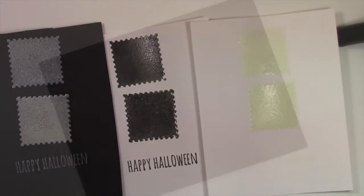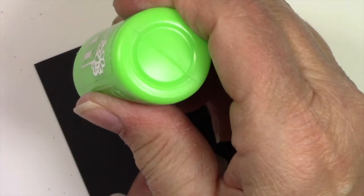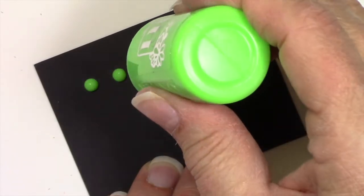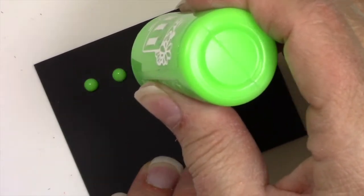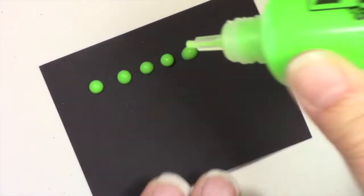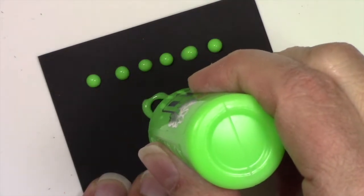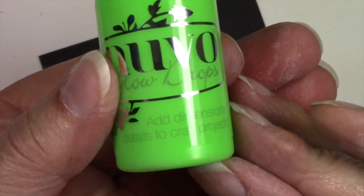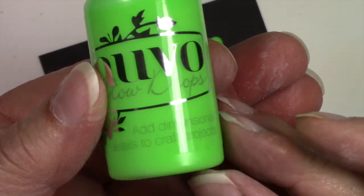Okay so here are examples. Disregard that middle one because we're not going to do that. Now I've got the Nuvo Sour Apple Glow in the Dark Drops. And I just wanted to plunk something down here on some black cardstock. And there's a good shot of the bottle.